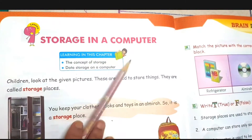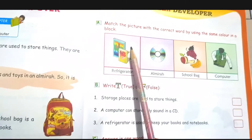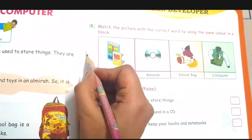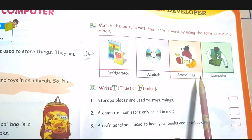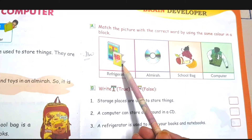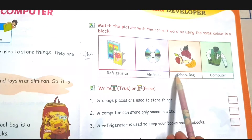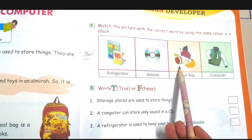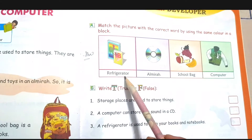Now today we are going to do the reader exercises of lesson 9, storage in a computer. First is: match the pictures with the correct word by using the same color. You can do this as your homework. These are the books — where do we store books? In the school bag, so color this school bag pink. Refrigerator stores fruits, so color it orange. I hope you understand.